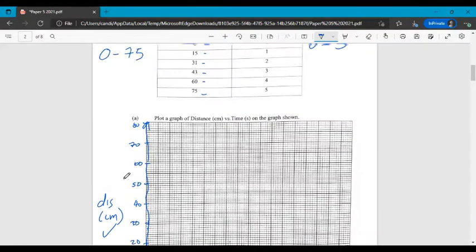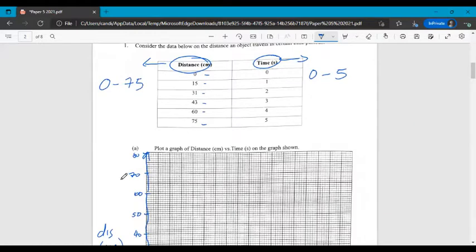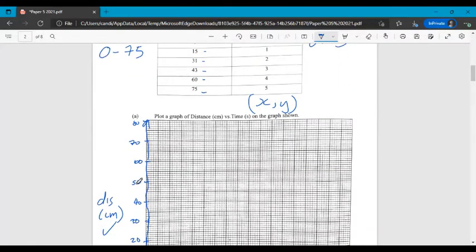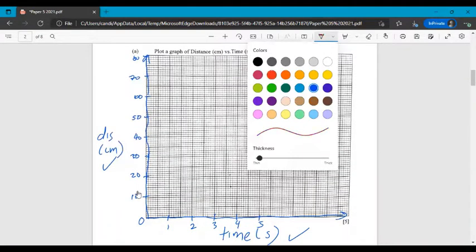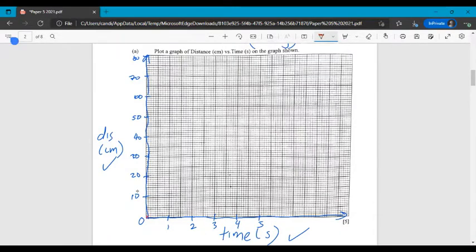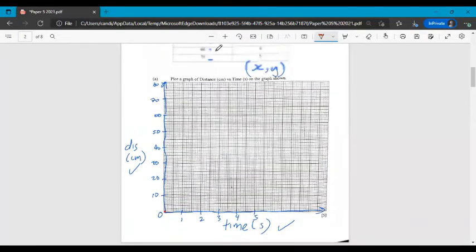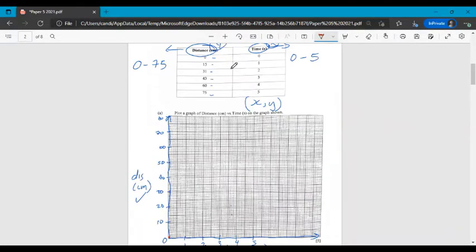So the next thing we need to do is plot our points. So it goes x comma y. This is the x values. These are the y values. So the first point that we're going to plot is 0, 0. So that's this point right here. Then we're going to plot the next point. I'm just going to zoom out so we can see our values.